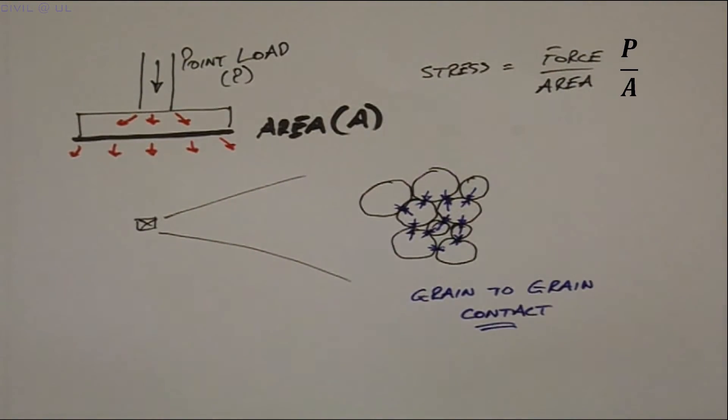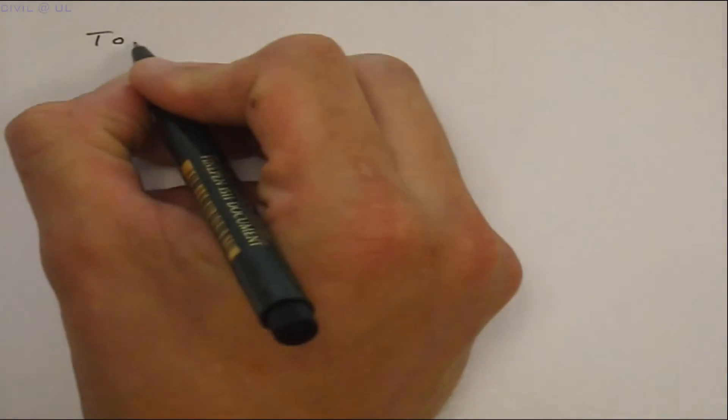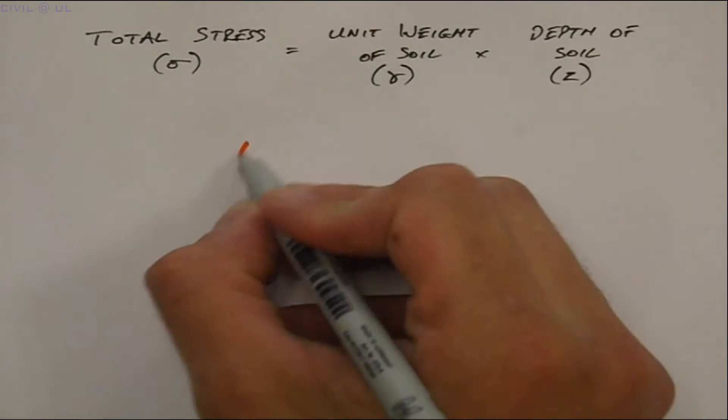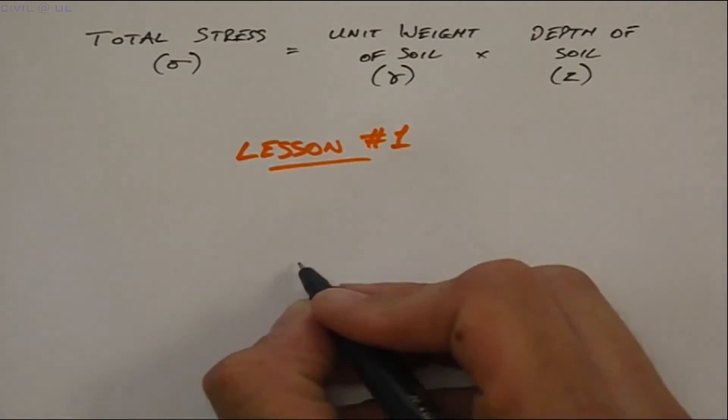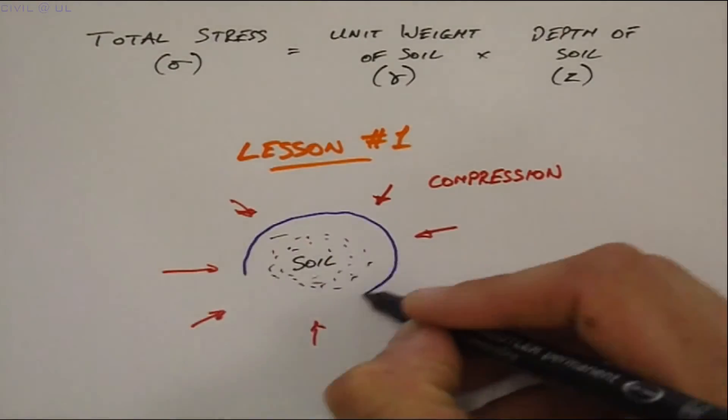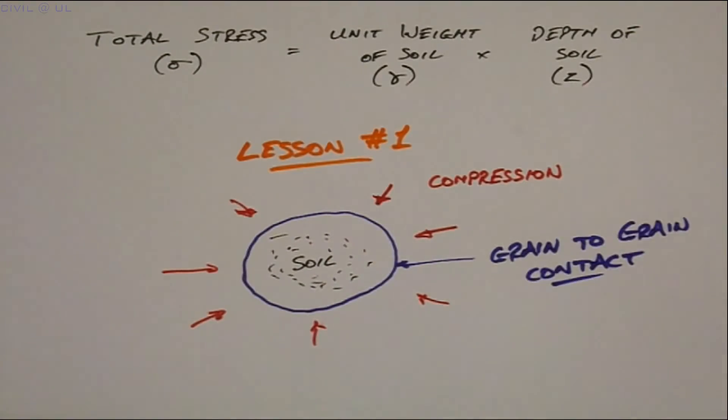Moving on from this, engineers are often required to calculate the stress at a given depth due to the weight of soil above. This is known as the total stress and can be calculated from the unit weight gamma multiplied by the depth of soil Z. This leads to our first important lesson: soil resists foundation or compressive loading by grain to grain friction.